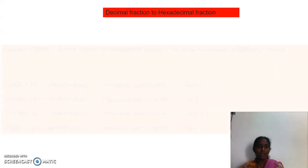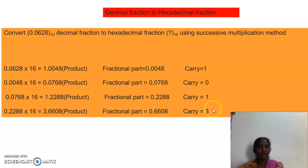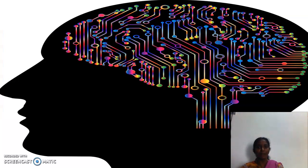Next, decimal fraction to hexadecimal fraction. We use the successive multiplication method. The given number is multiplied by 16, we write the result, and the carry is noted. For example, the fraction 0.0048 — we continue the steps until the result reaches 0, or we can stop after 4 or 5 steps. We write the answer from top to bottom. The answer is 0.1013, converting from decimal fraction to hexadecimal fraction.